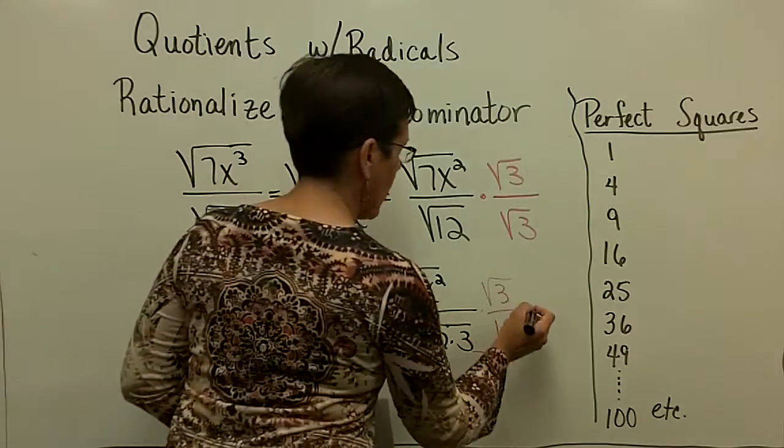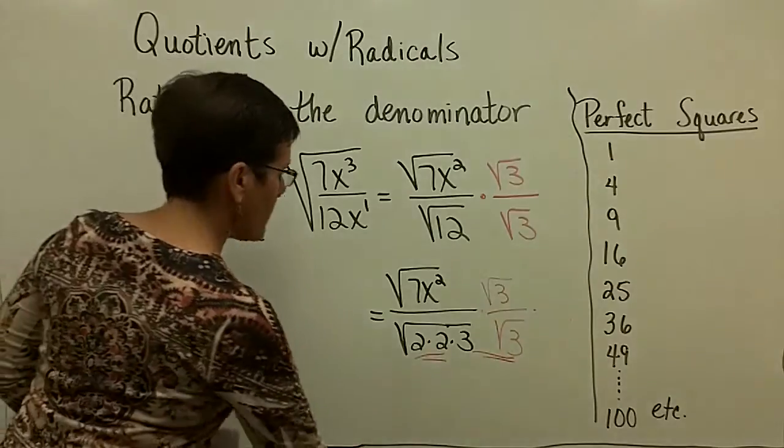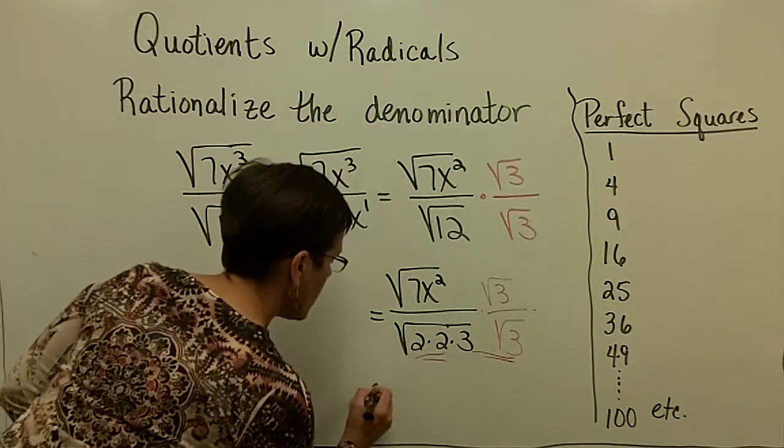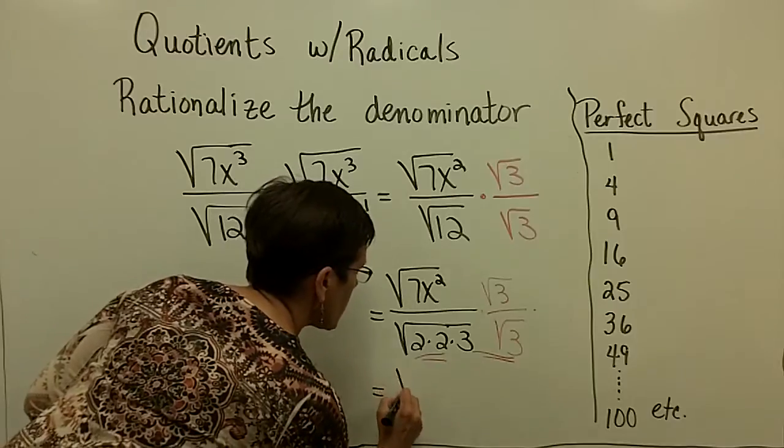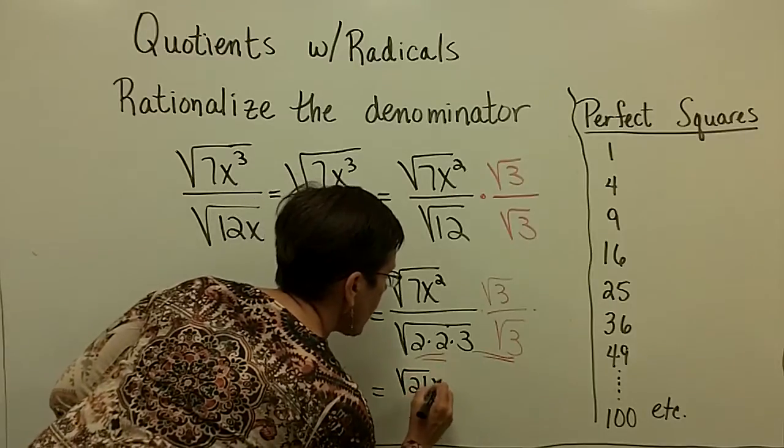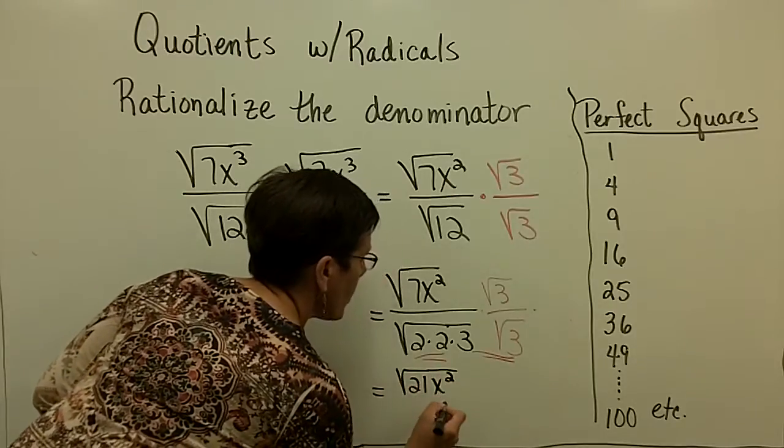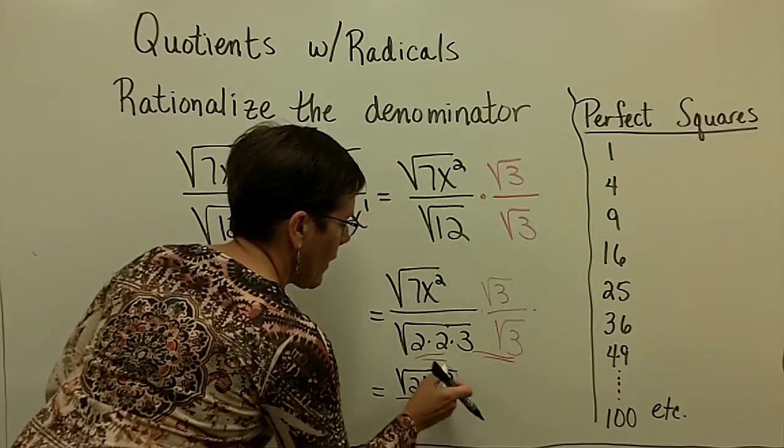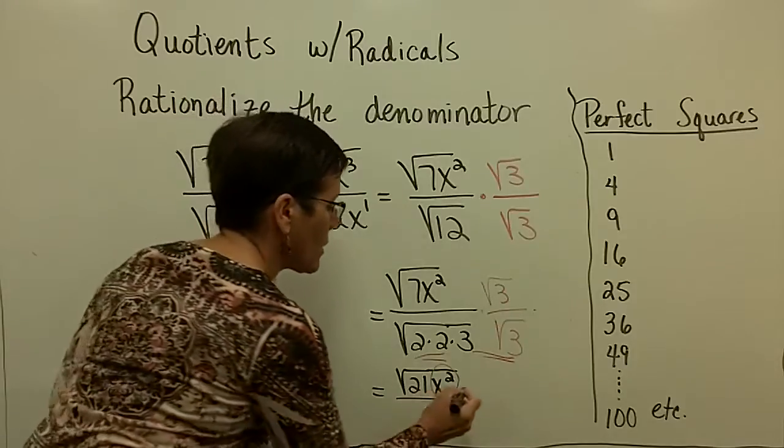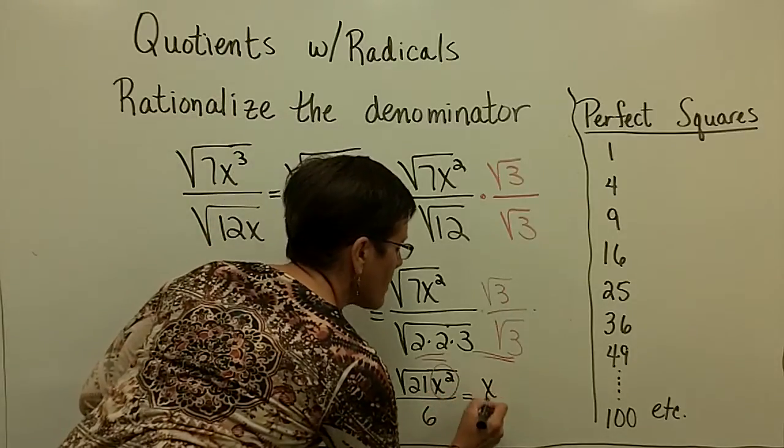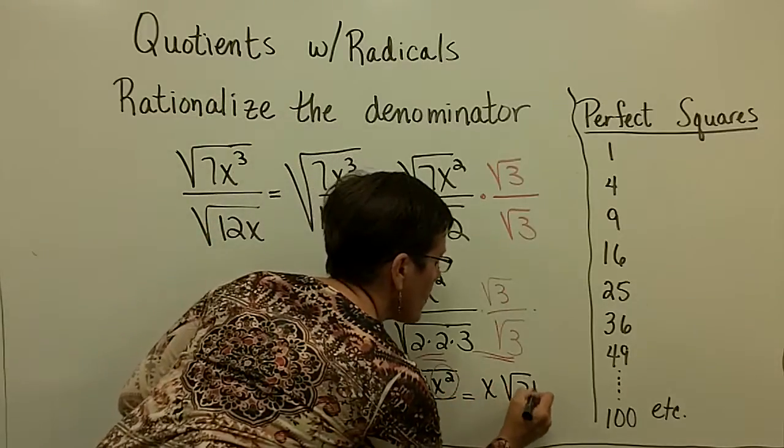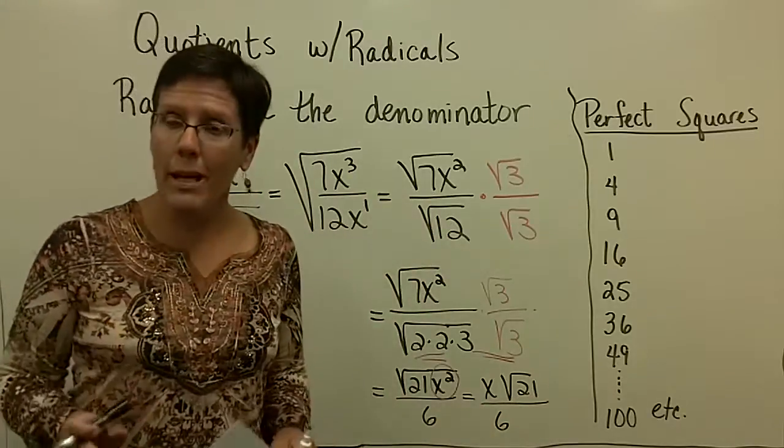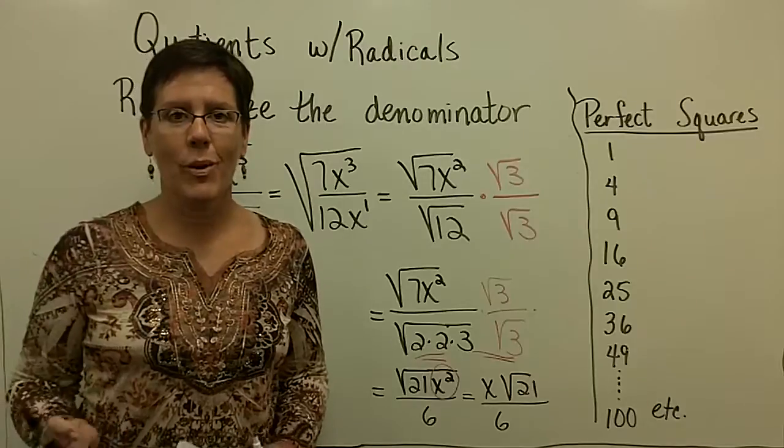So finally, in the numerator, I have the square root of 21x squared in the numerator and a 6 in the denominator, and then finally, that right there has to come out from underneath the radical. The square root of x squared is x, and then I can't do anything with the 21 and the 6 is in the denominator. No more radical downstairs, I've simplified the whole expression.